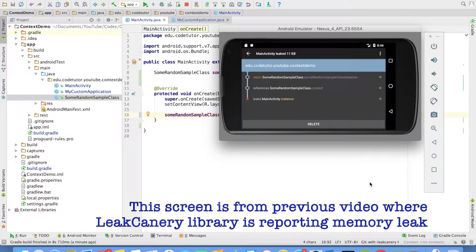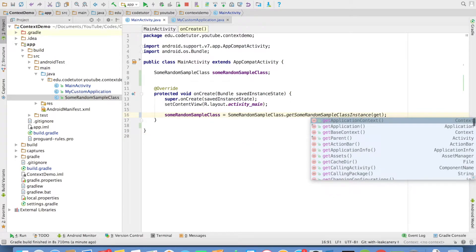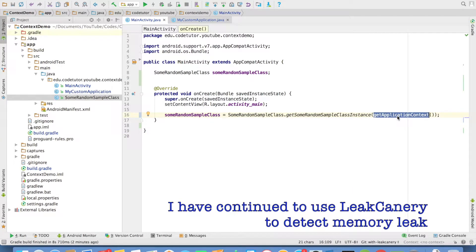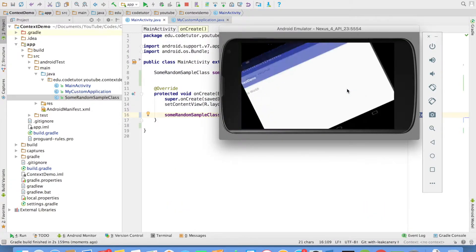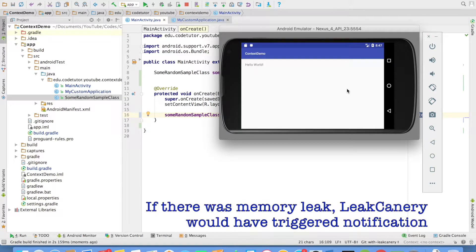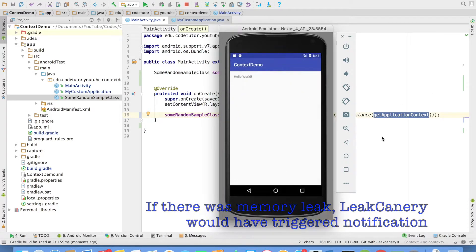Now one simple way of avoiding it is instead of using this, I can invoke a method called getApplicationContext. Now let me try to rerun the application and let me change the orientation and if you observe no memory leak is happening now. Even if I change it many number of times, no memory leak is happening.